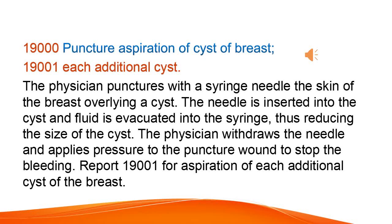Puncture aspiration of cyst of breast; each additional cyst. The physician punctures with a syringe needle the skin of the breast overlying a cyst. The needle is inserted into the cyst and fluid is evacuated into the syringe, thus reducing the size of the cyst. The physician withdraws the needle and applies pressure to the puncture wound to stop the bleeding. Report 19,001 for aspiration of each additional cyst of the breast.